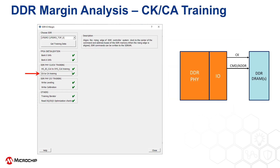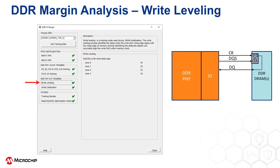CK to CA training aligns CK, which is the clock driving the DDR memory, with respect to the command address or CA bus. Right leveling is the process of edge aligning the rising edges of CK and DQS. It uses a series of delay taps to adjust DQS until DQS, acting as a clock, samples until it finds the rising edge of CK. The number of taps used in delaying DQS is presented in this window.